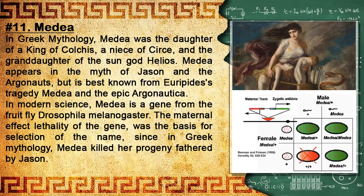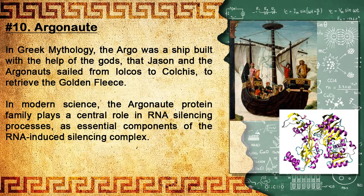Number 11: Medea. In Greek mythology, Medea was the daughter of a king of Colchis, a niece of Circe, and the granddaughter of the sun god Helios. Medea appears in the myth of Jason and the Argonauts but is best known from Euripides's tragedy Medea and the epic Argonautica. She is known in most stories as a sorceress and is often depicted as a priestess of the goddess Hecate. In modern science, Medea is a gene from the fruit fly Drosophila melanogaster; the maternal effect lethality of the gene was the basis for selection of the name, since in Greek mythology Medea killed her progeny fathered by Jason.